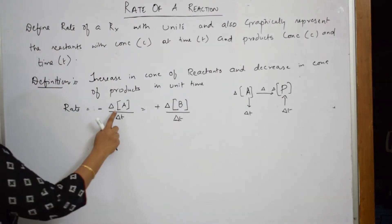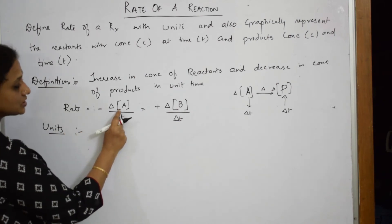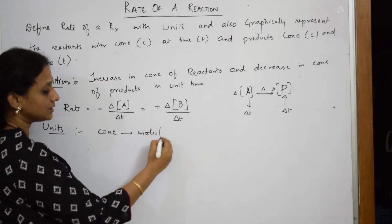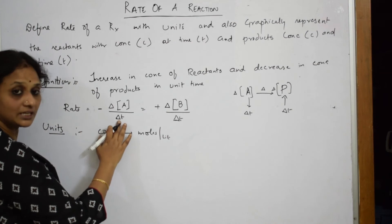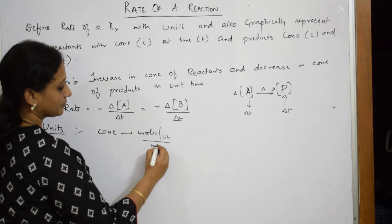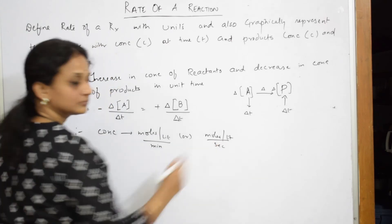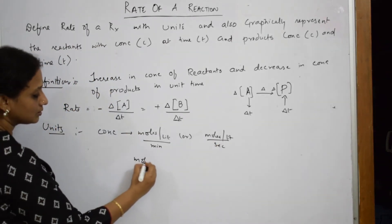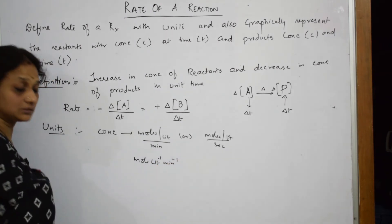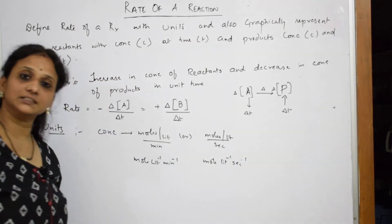Now let us write the units. If I have to write the units of rate of reaction, observe — concentration is always measured in moles per liter. When you write time, you can either mention it in terms of minutes or seconds. Finally, how does it come? Mole liter inverse minute inverse, or mole liter inverse second inverse. These are your units.